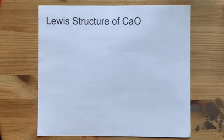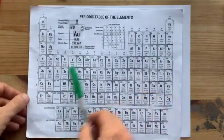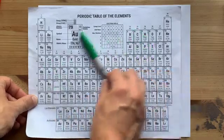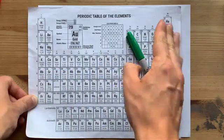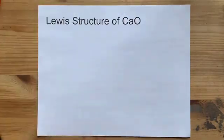The Lewis structure of calcium oxide has calcium, a metal from the left side of the periodic table, bonding with oxygen, a non-metal from the right-hand side of that staircase.